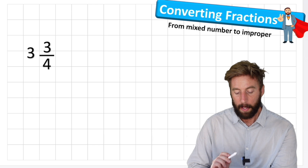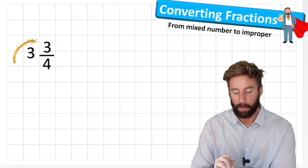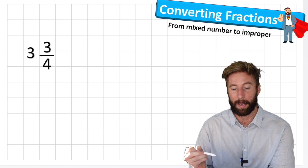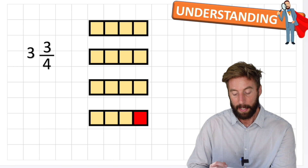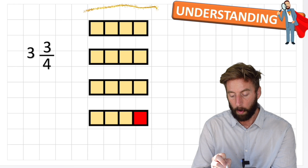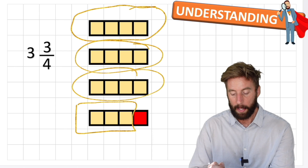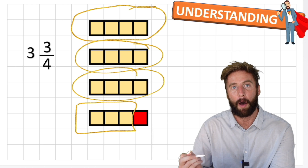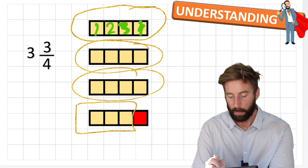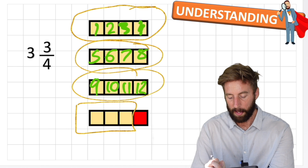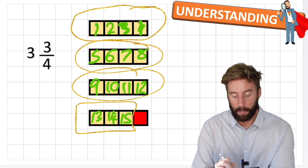Question one says three and three quarters - a mixed number because we have a whole number and a fraction. Three and three quarters can be represented in a bar model by having three whole - one, two, three - and then three quarters of another one. The improper fraction is asking how many quarters do you have without the mixed number. We can count: 1, 2, 3, 4, 5, 6, 7, 8, 9, 10, 11, 12, 13, 14, 15 - therefore this equals 15 fourths.